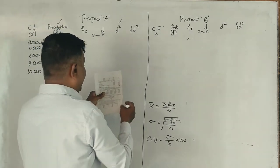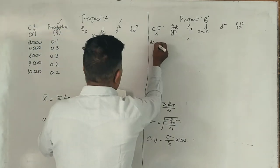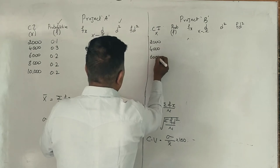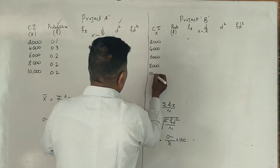Project B has the same cash inflows: 2000, 4000, 6000, 8000, 10,000.